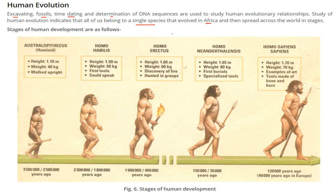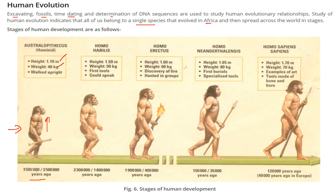So what are these stages? The stages of human development are: Australopithecus, height around 1.1m, weight 4kg, walked upright — 35 lakh years ago.